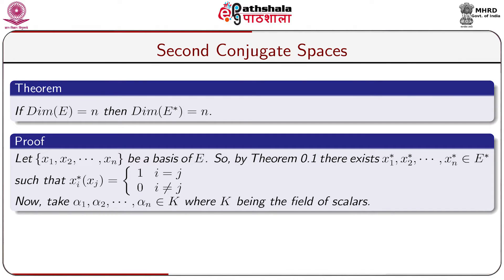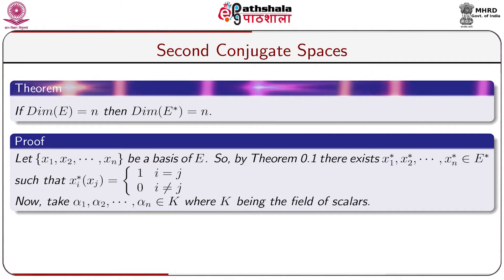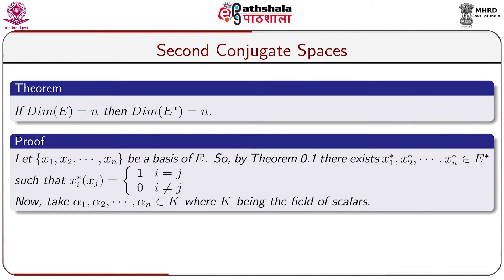Up to this point in module 2, we have been introduced to the notion of second conjugate spaces, and we have learnt what reflexive Banach spaces are. Now we shall study some properties on reflexivity of a normed linear space, and some additional properties of second conjugate spaces. Let us take a theorem: if dim(E) = n, then dim(E*) = n. That is, if the dimension of the underlying space E equals n, then the dimension of its first conjugate space E* is also equal to n.